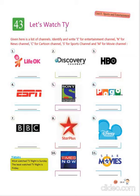We all watch TV. We have many channels on TV. We have Entertainment Channel, News Channel, Cartoon Channel, Sports Channel, and Movie Channel. By looking at the icon, you have to identify which type of channel it is. You have to write E for Entertainment Channel, N for News Channel, C for Cartoon Channel, S for Sports Channel, and M for Movie Channel.